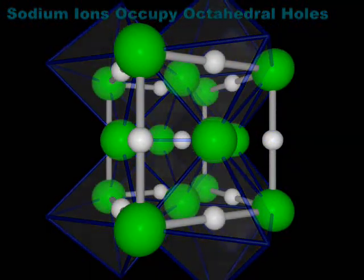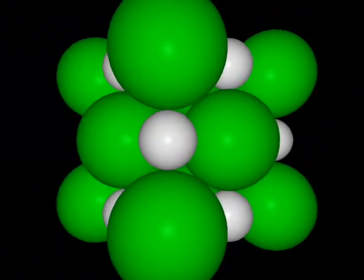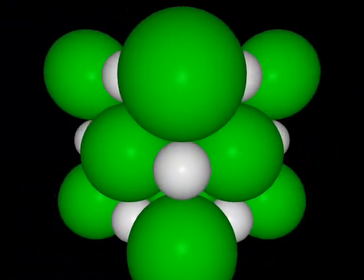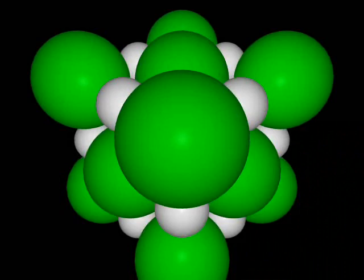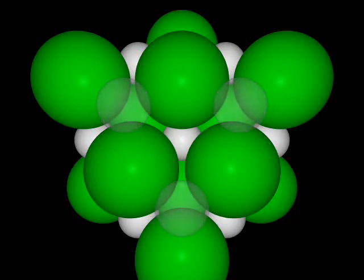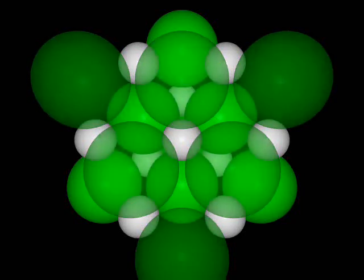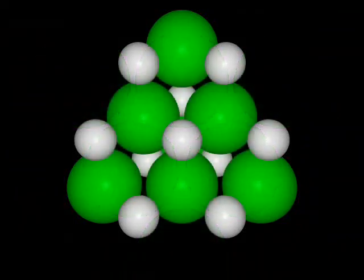We can gain a different perspective on this structure by examining a space-filling model. The structure is based on a face-centered cubic array of chloride ions and therefore contains close-packed layers of chloride ions. By removing successive layers, we see that the sodium ions, as well as the chloride ions, form close-packed layers. The structure can therefore be described as alternating close-packed layers of sodium and chloride ions.